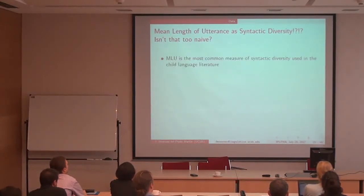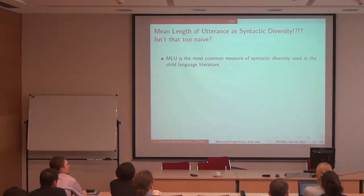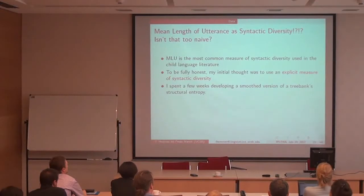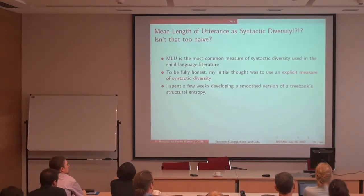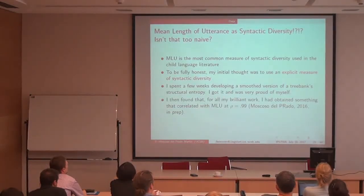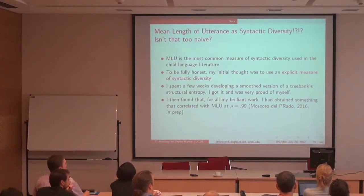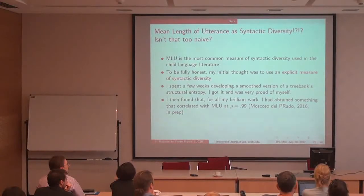You might be shocked that I'm using something as simple as mean length of utterance as my measure of syntactic diversity. I really didn't like that — MLU is the most common technique in language acquisition to measure syntax development, but I always thought it was very stupid and a really bad measure. So I spent a few weeks developing a way of generalizing an entropy of a context-free grammar, also generalizing for the rules of Heinle and Gore. I was really proud of myself. And then I found that it correlated at .99 with mean length of utterance. Despite all my brilliant work, I had arrived at the exact same point the language acquisition community had been using since the 1920s — only much more complicated to compute.